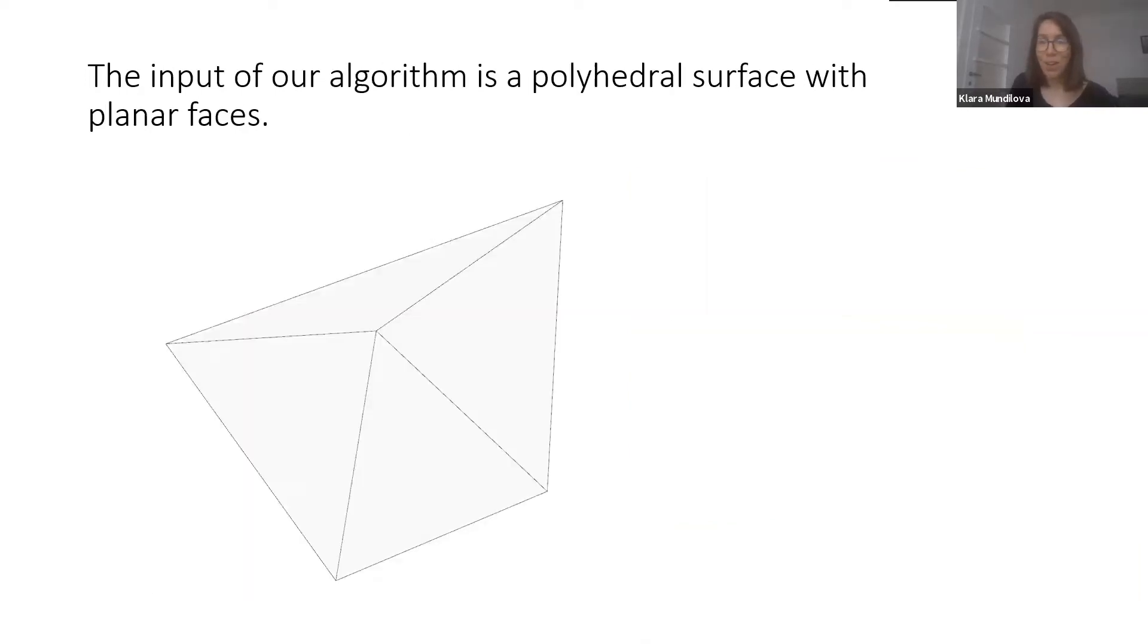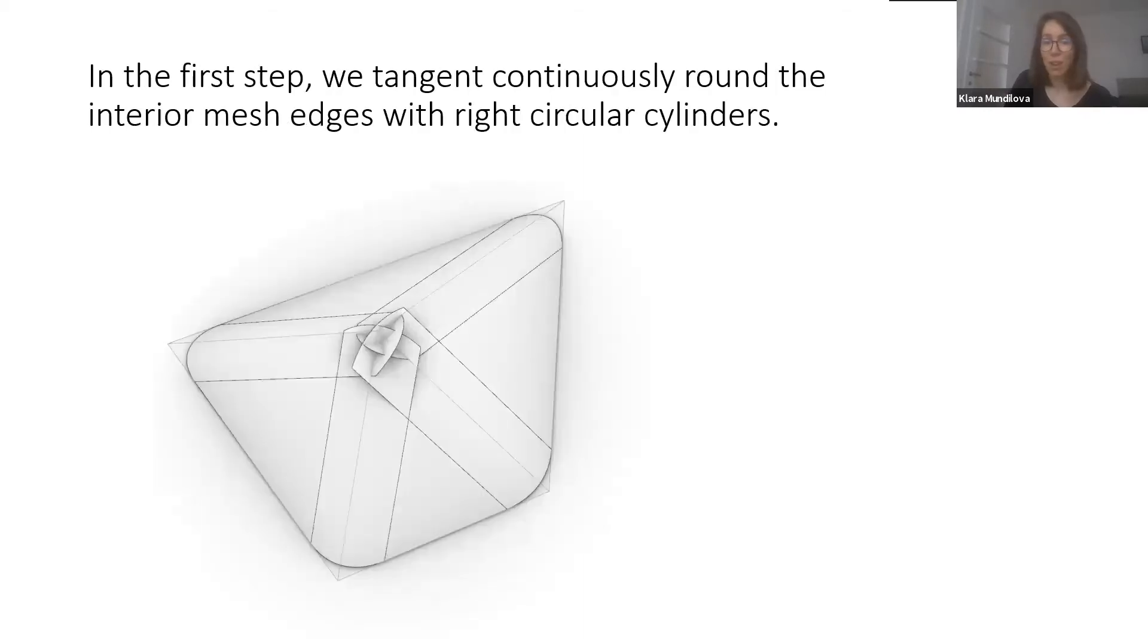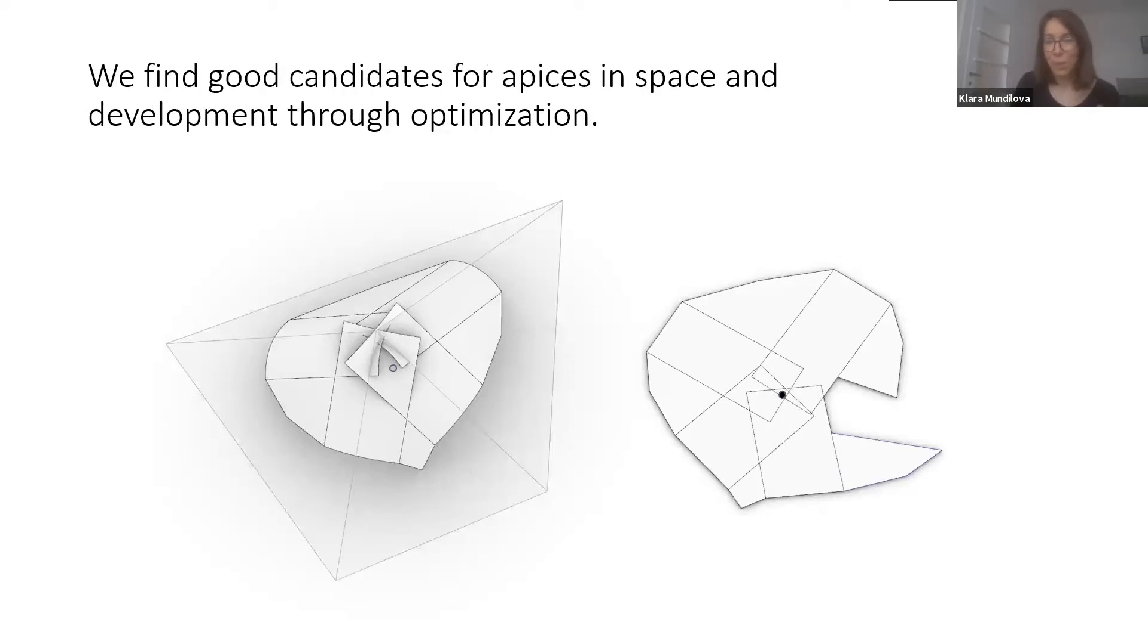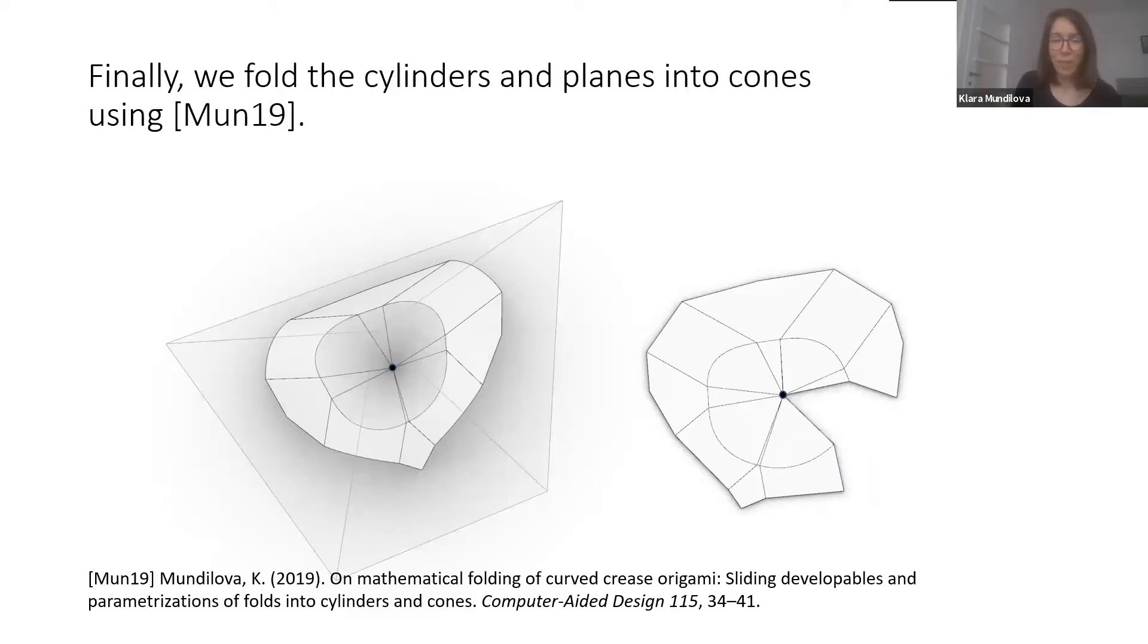Our algorithm works as follows. We start with the polyhedral surface with planar faces and in the first step we round each edge of the polyhedral surface with right circular cylinders that are tangent continuous to the adjacent faces. To get rid of the mess that comes up around vertices, we then consider each vertex separately and we find a good apex position.